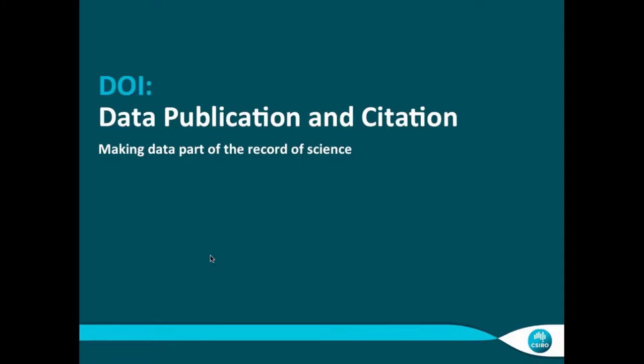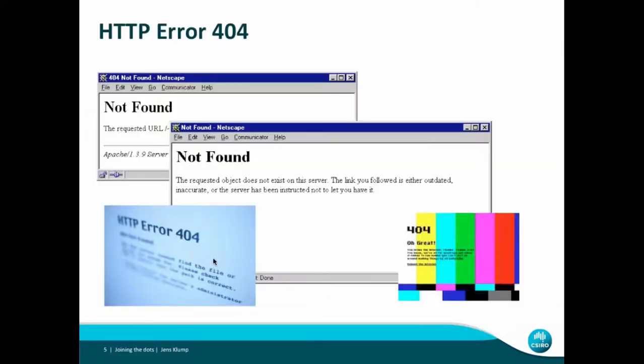The main topic of today will be DOIs and IGSNs. I start with the more well-known topic of digital object identifiers for data publication and citation. My focus will be on how this was intended to make data part of the record of science — that will be the guiding principle for the discussions from my perspective.